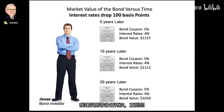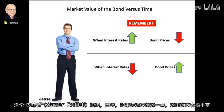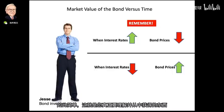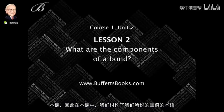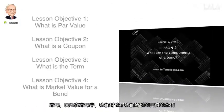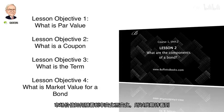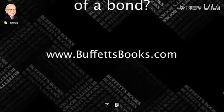If you didn't get it, I'd recommend rewinding and listening again, because this is vital to understanding how Warren Buffett invests. Here's the key takeaway: when interest rates go up, bond prices go down. And when interest rates go down, bond prices go up. It's really that simple. In this lesson, we covered par value, coupon rate, the term, and how market value changes with interest rates. I look forward to seeing you in the next lesson.